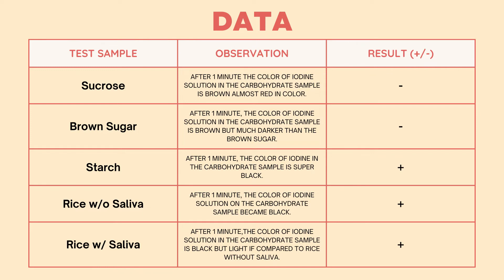Now we're going to discuss the data obtained from the experiment of each test sample with iodine. First is sucrose. After 1 minute, the color of iodine solution in the carbohydrate sample is brown, almost red in color, which results in a negative presence of carbohydrates. Brown sugar: after 1 minute, the color is brown but much darker than the sucrose, which also results in a negative presence of carbohydrates.